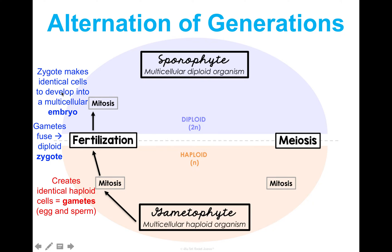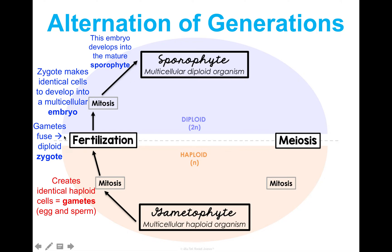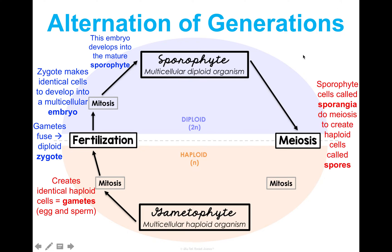That zygote is going to undergo mitosis — just like a zygote in us would — and create identical cells, making a multicellular embryo that can grow and develop. This embryo develops into a mature sporophyte, which is multicellular and diploid because it has two sets of chromosomes from the egg and sperm fusing. Sporophyte cells called sporangia will then undergo meiosis, cutting the chromosome number in half, giving us haploid cells called spores.